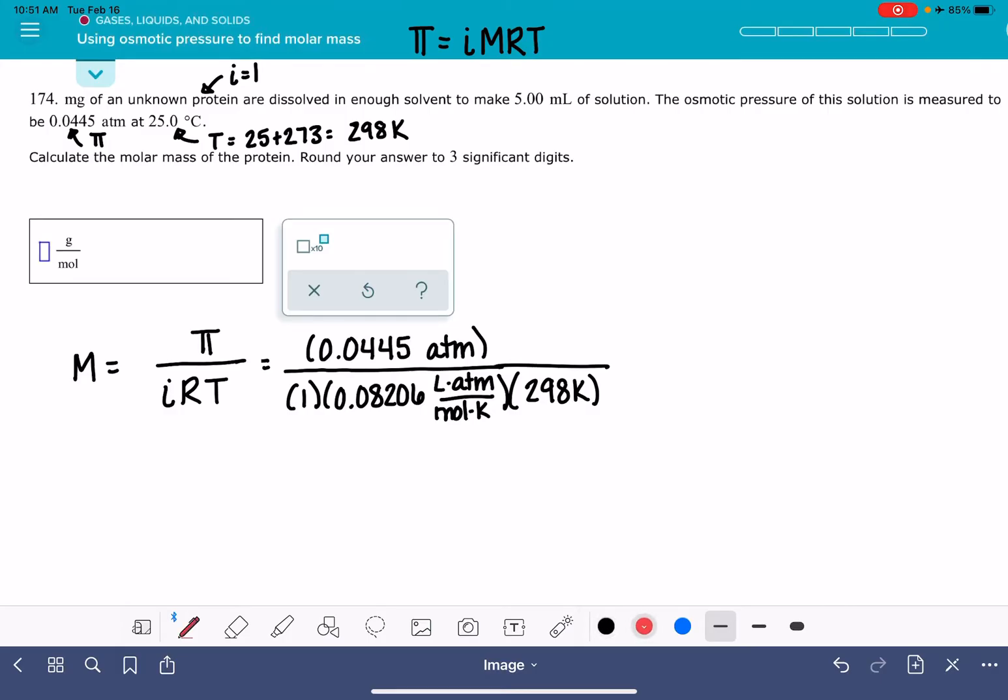When we look at our units here, our atmosphere units are going to cancel. The Kelvin unit is going to be canceling. We're going to be left with 1 over liters over moles. Let's go ahead and see what this works out to be. 0.0445 divided by 0.08206 and divided by 298 equals 0.00182.